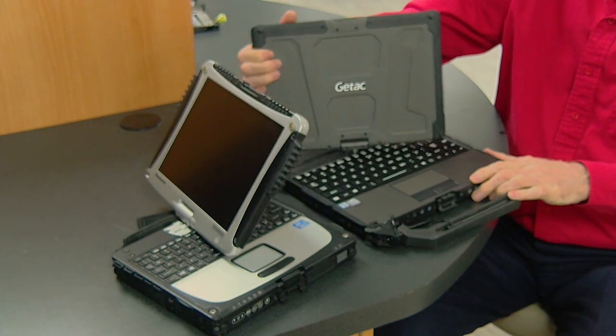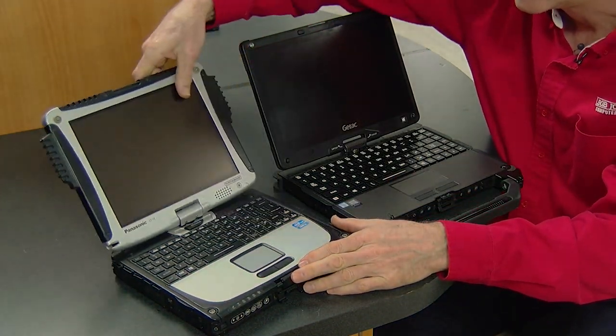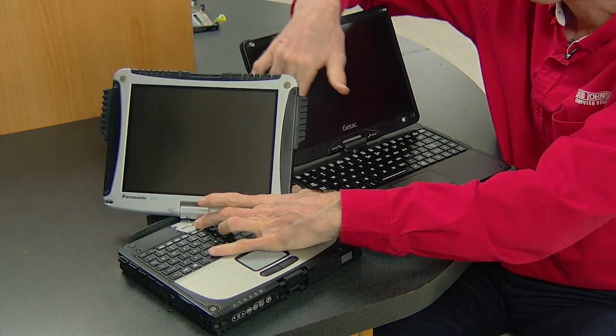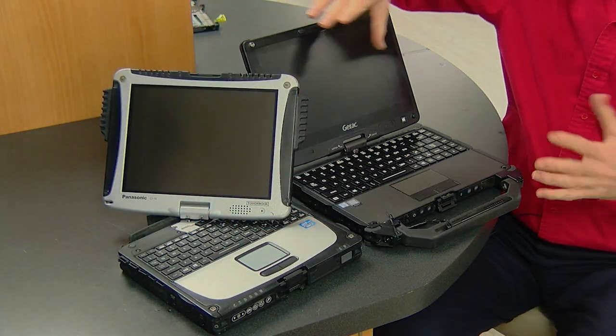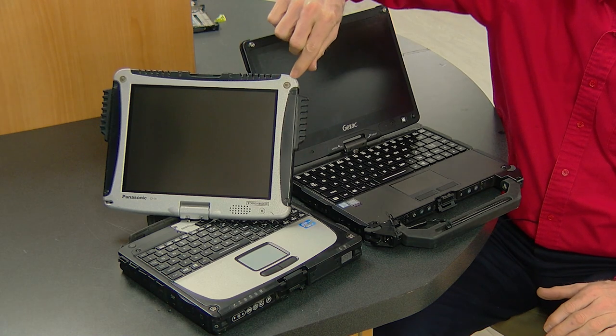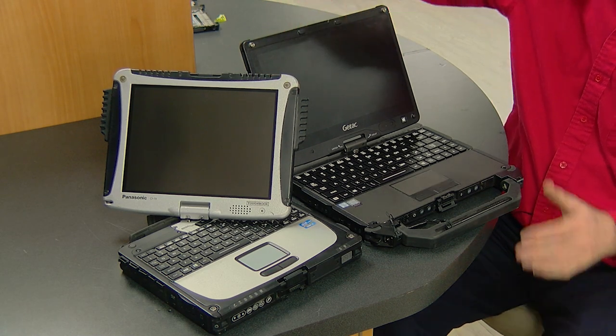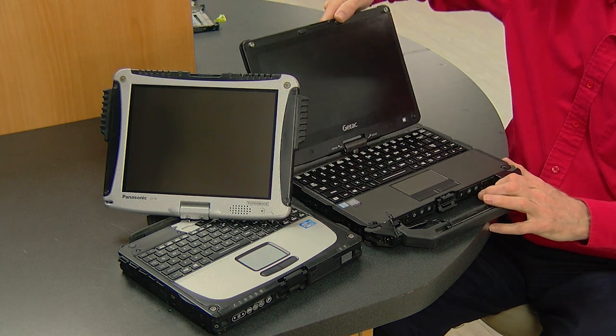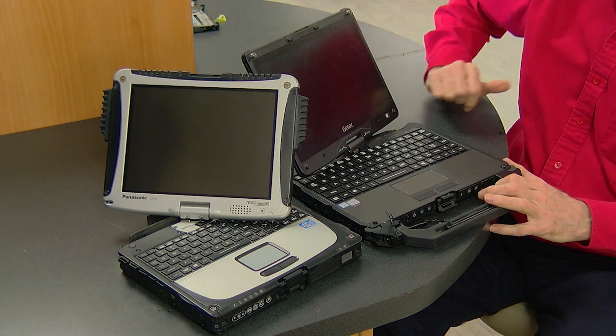whereas on the Panasonic, if we take a look at it, it has a release button right here that you have to push over to spin around. Good, bad. I like the release button so that screen can't move if I don't want it to. G-TAC, this could spin around for no reason. If somebody bumps into your laptop, that's going to spin like that.